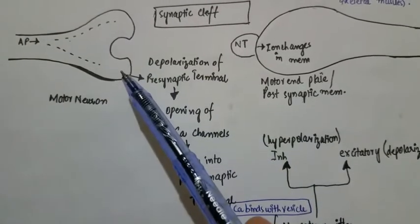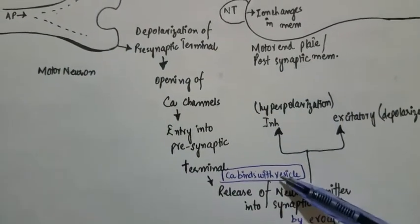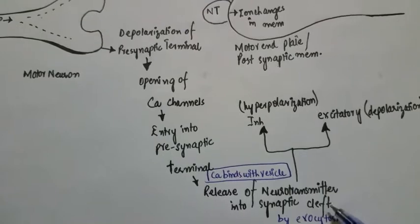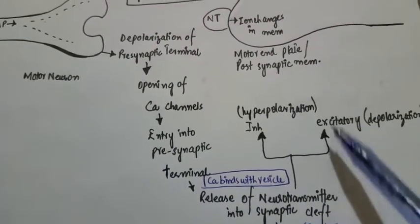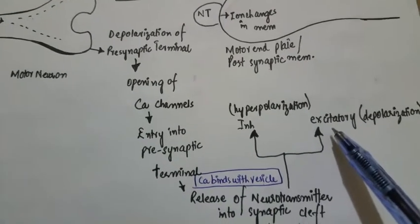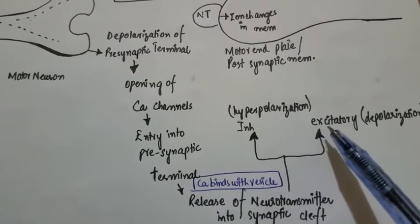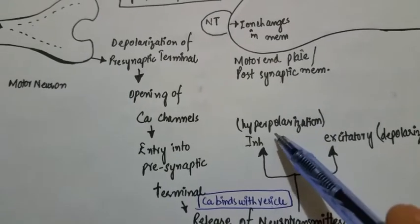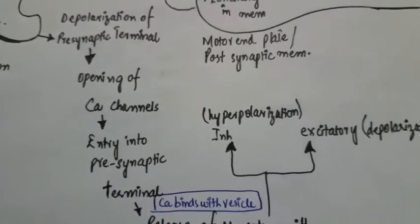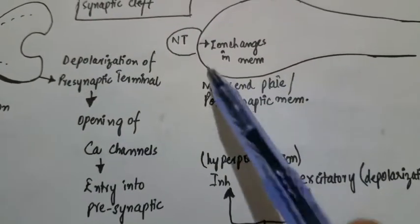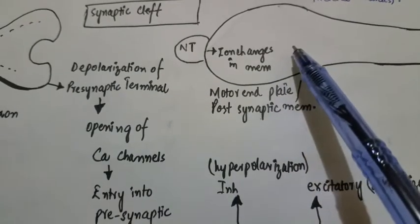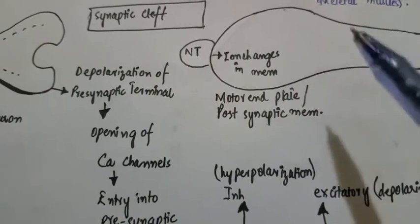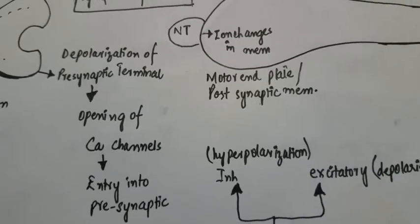This calcium inside the presynaptic membrane binds with the vesicles of the neurotransmitter, resulting in the release of neurotransmitters into the synaptic cleft. Neurotransmitters can be inhibitory or excitatory. Inhibitory neurotransmitters lead to hyperpolarization, and excitatory ones lead to depolarization of the postsynaptic membrane, causing ion changes and formation or inhibition of the action potential.